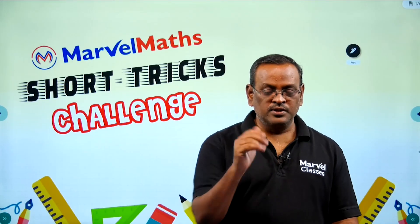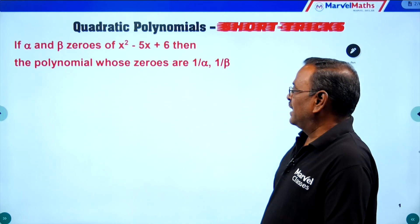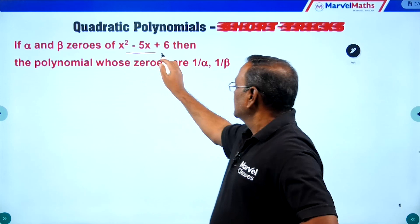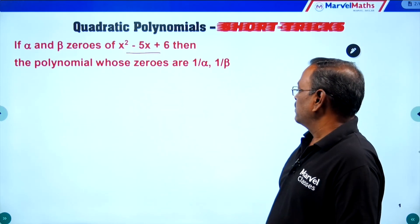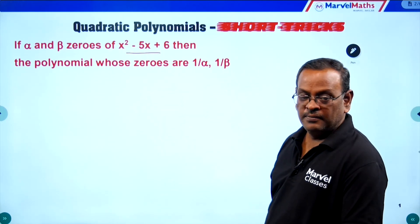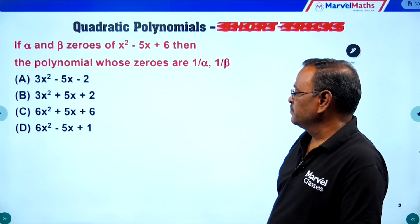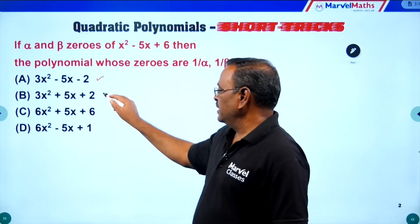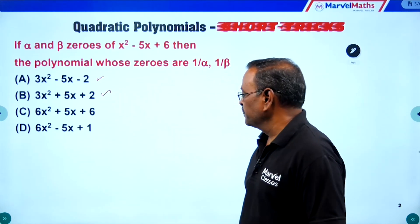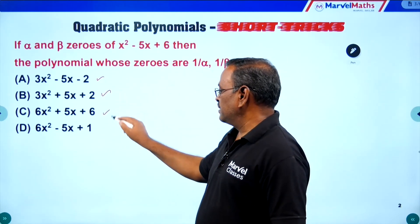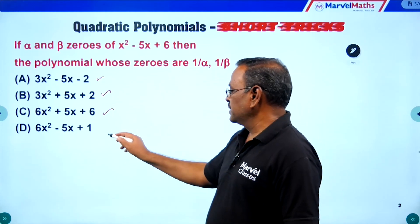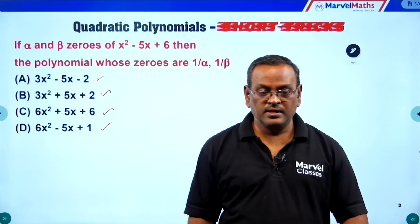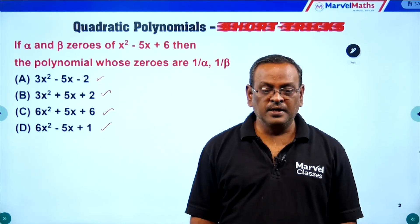Today's question: if alpha and beta are zeros of x squared minus 5x plus 6, then find the polynomial whose zeros are 1 by alpha and 1 by beta. There are 4 options: option A is 3x squared minus 5x minus 2, option B is 3x squared plus 5x plus 2, option C is 6x squared plus 5x plus 6, and option D is 6x squared minus 5x plus 1. Use short tricks to find the correct answer in minimum time.